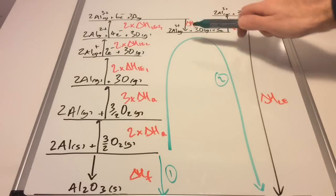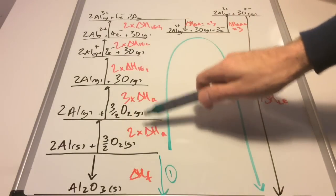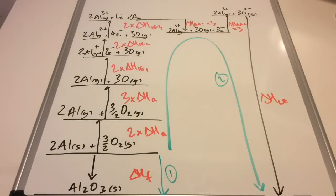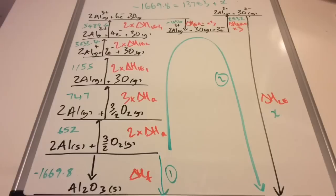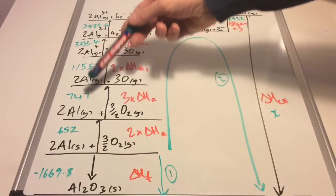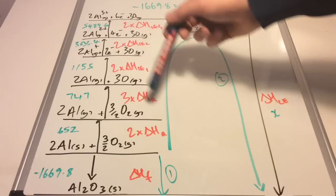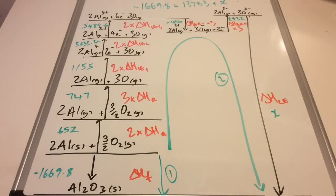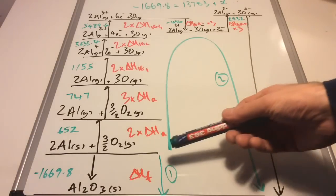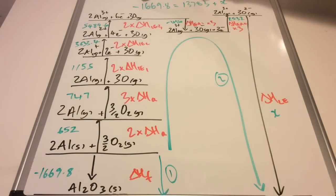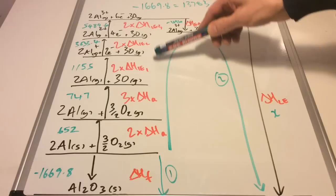You can see in green I've added all the values for all of these enthalpy changes, remembering that this one's doubled and this one's trebled and so on. At the top here I've got virtually the finished Hess's law treatment of the numbers. The enthalpy change of formation, this -1669.8, equals all of these plus the unknown lattice enthalpy.